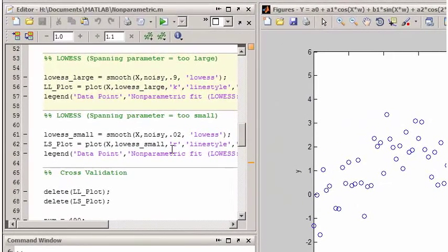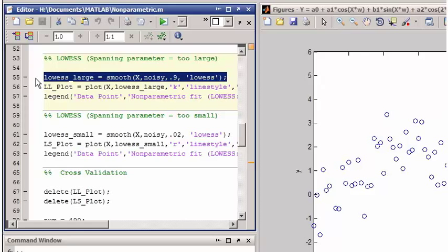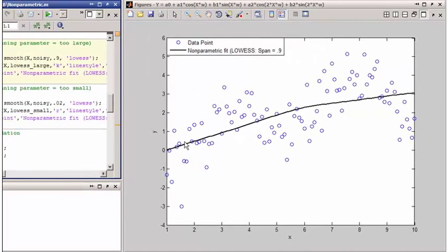The accuracy of the localized regression model depends on choosing an appropriate value for the smoothing parameter. If you choose a smoothing parameter that is too large, you'll underfit the data. Here, I'm deliberately choosing a very large smoothing parameter. And as you can see, the fitted curve is much too flat. It doesn't describe the true relationship between the x and y variables.